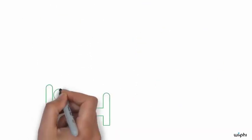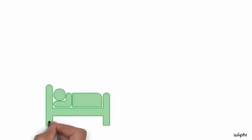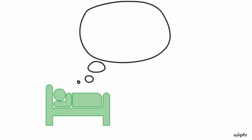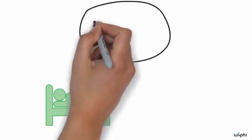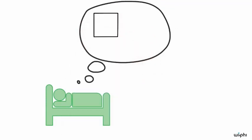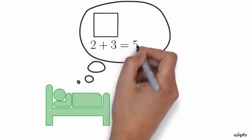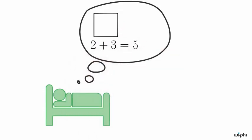You might think that there are some facts you could know whether or not you are dreaming. The 17th century philosopher René Descartes suggested that even if you are dreaming you should still be able to know that a square has four sides or that two plus three equals five.